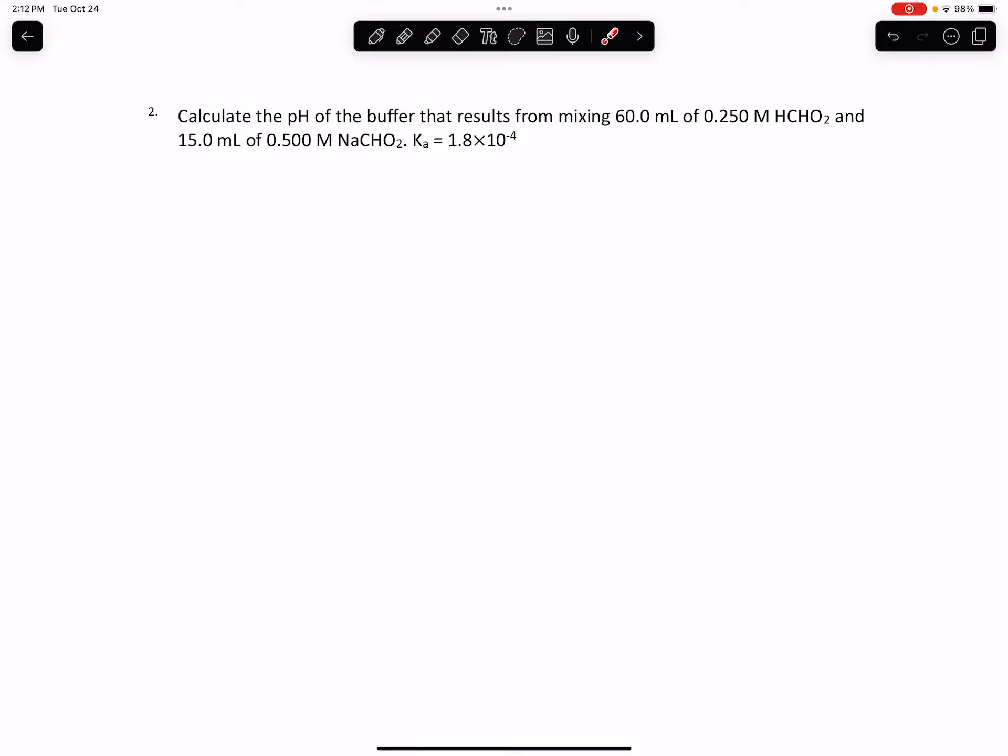Hello, this is Valentine from Complistic, and in this problem we're going to calculate the pH of a buffer that results from mixing 60.0 mL of 0.250 M HCHO2 and 15.0 mL of 0.500 M NaCHO2.